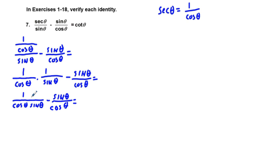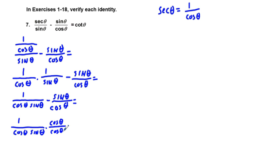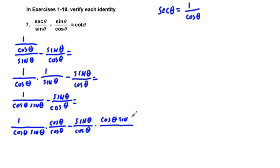Now we find a common denominator between these two terms. For the first term, we have 1 over cosine theta sine theta. We're going to multiply by cosine theta over cosine theta. And for the second term, sine theta over cosine theta, we'll multiply by cosine theta sine theta over cosine theta sine theta to get a common denominator.